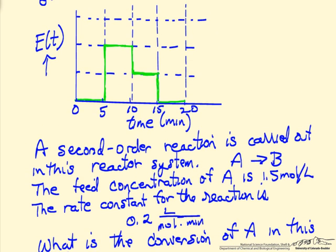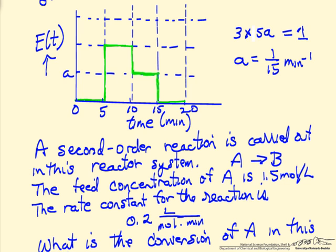We'll do this in a simplified way by just looking at the plot. Looking at the area, if this has some scale we're trying to determine — call it A — then one of these cubes is 5A. There are three of them, so 3 times 5A has to equal 1, giving A equals 1/15. The units are inverse time, so the area is dimensionless. We can replace A by 1/15, with units of minutes to the minus 1.